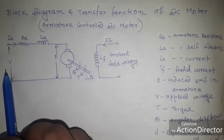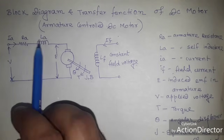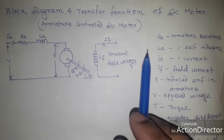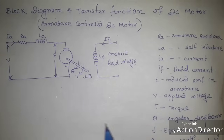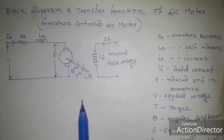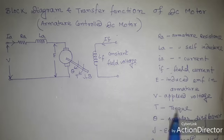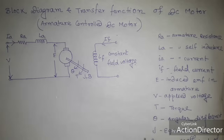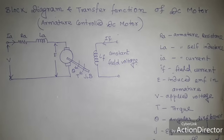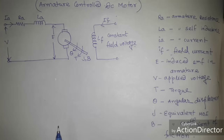The parameters are: VA is the armature voltage, RA is the armature resistance, LA is the self-inductance. T is the torque, theta is the angular displacement, J is the equivalent moment of inertia, and B is the equivalent coefficient of friction.